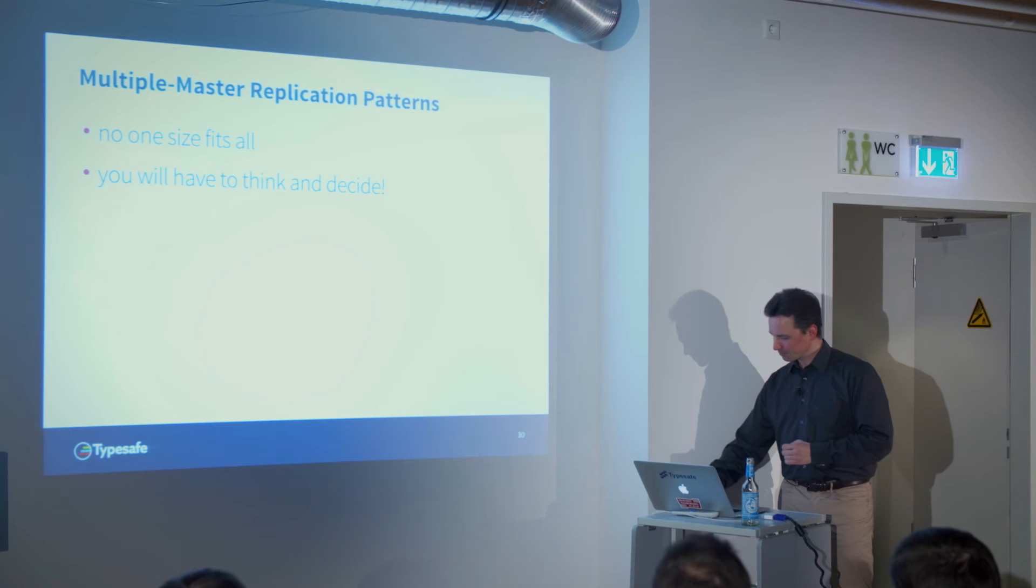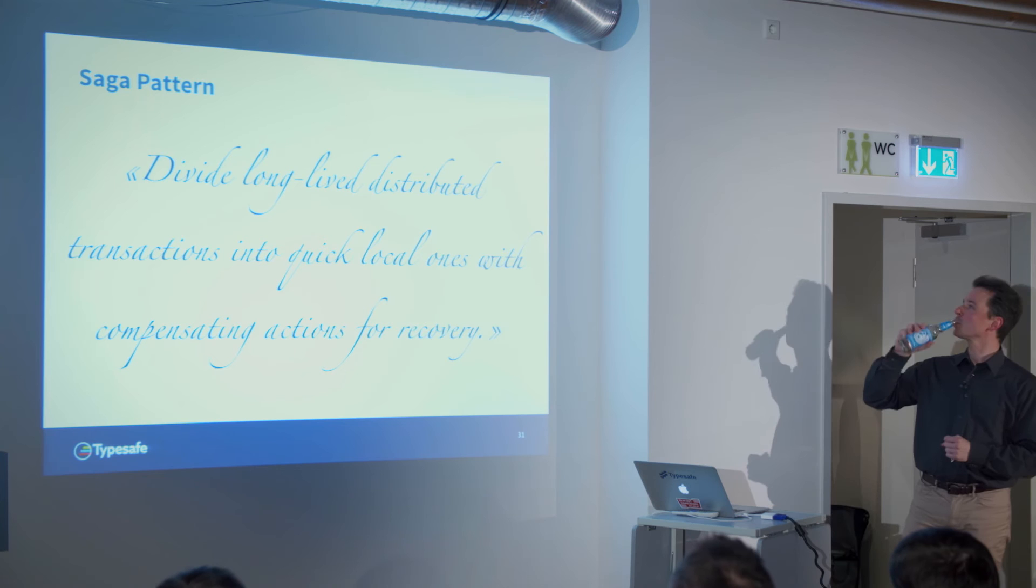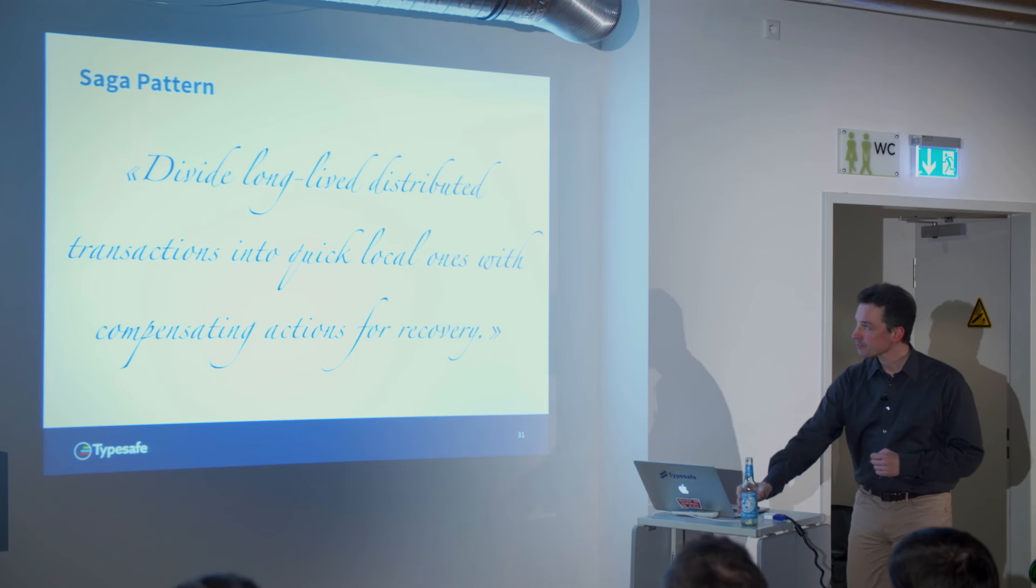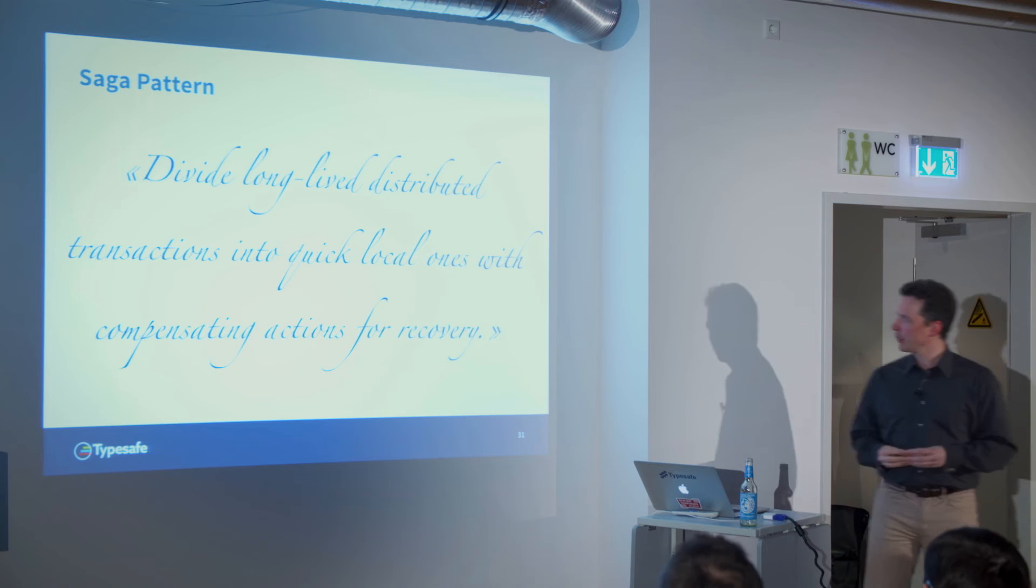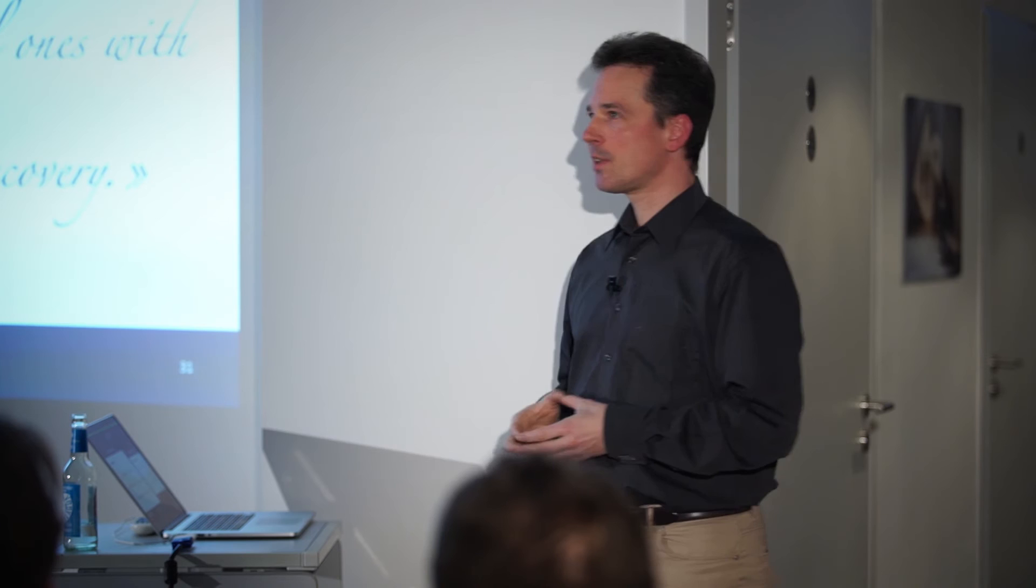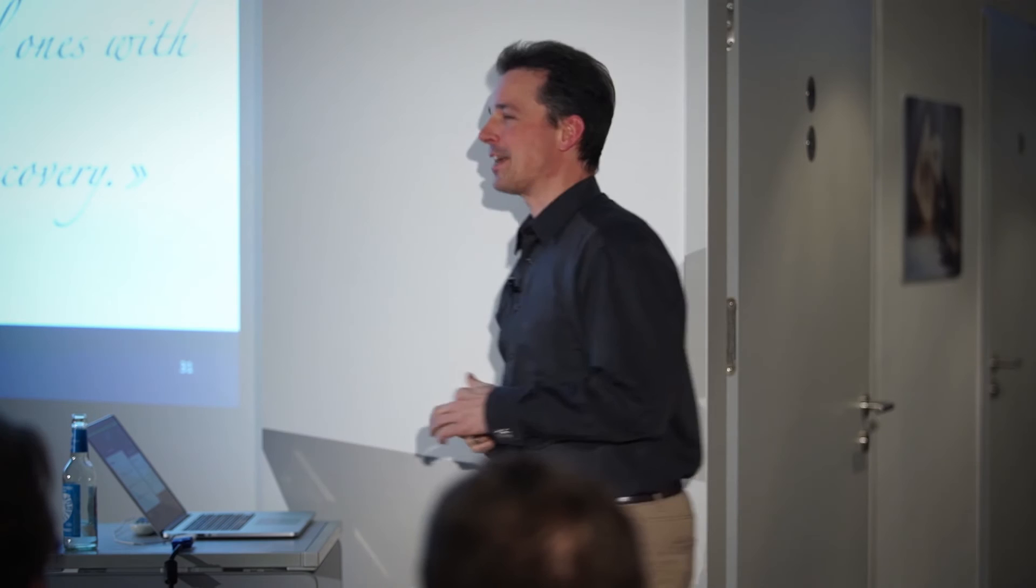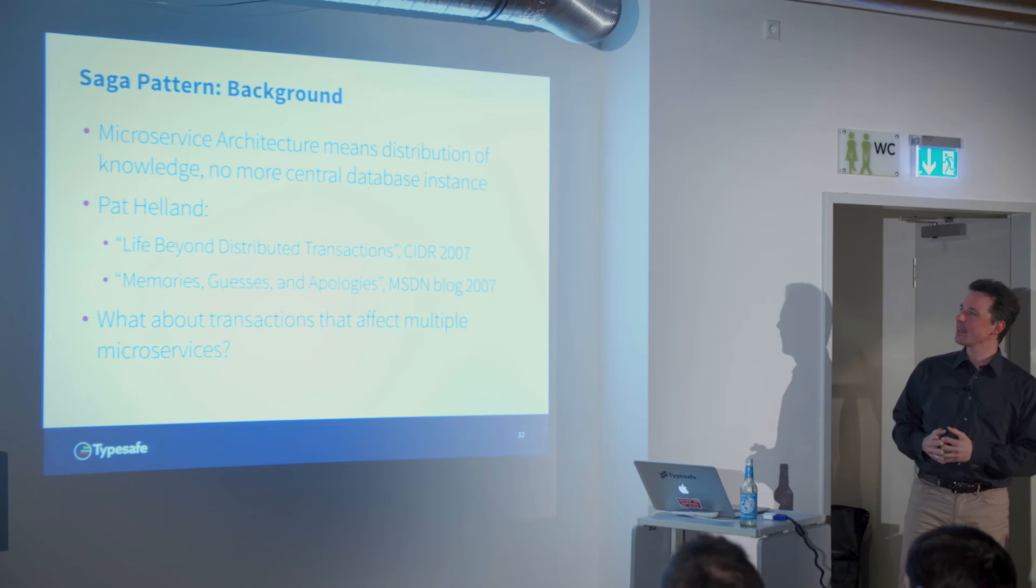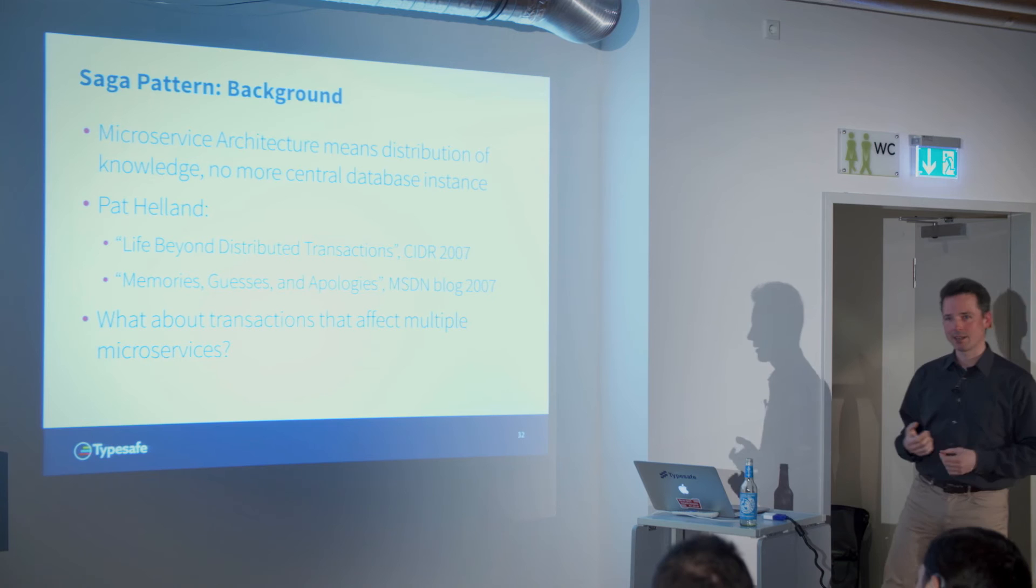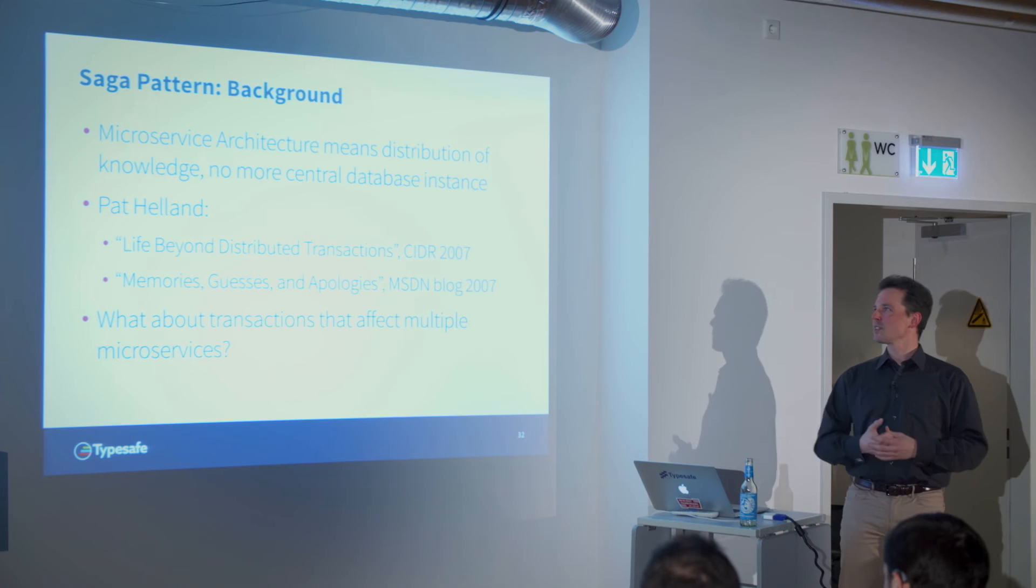The last pattern that I will talk about is the saga pattern. Divide long-lived distributed transactions into quick local ones with compensating actions for recovery. There's a problematic thing here in this sentence. And that's distributed transaction. Distributed transactions. Who here loves them? No, they don't really work. That's known. They have all these problems that we basically talked about it during the replication just now. If you want to have consensus, then it won't work sometimes. And otherwise you have these holes when it's not consistent. So, distributed transactions are not really the answer.